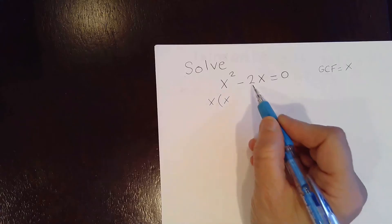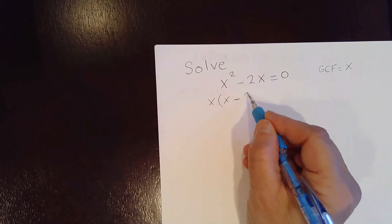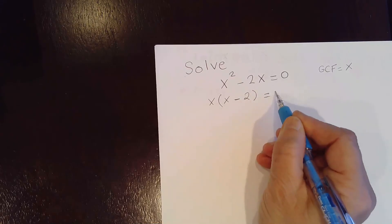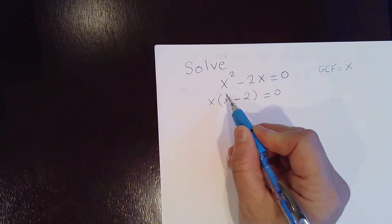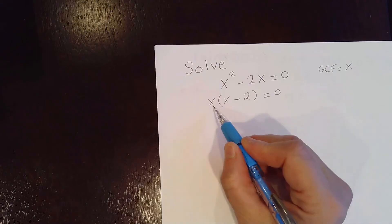Now if you factor x from the second term, you'll be left with negative 2 equal to 0. If you distribute, you should get back this expression. So that's what you will get.